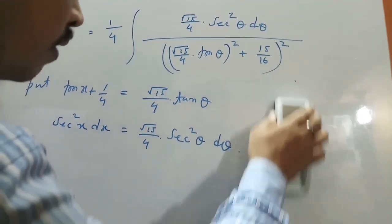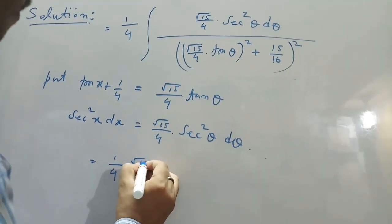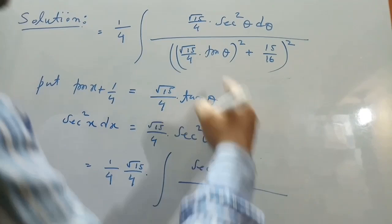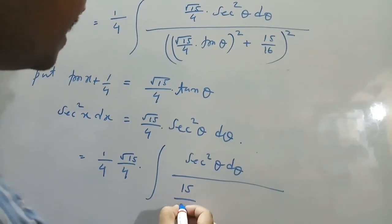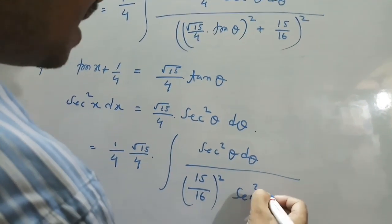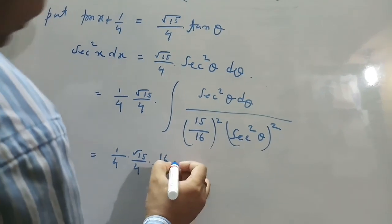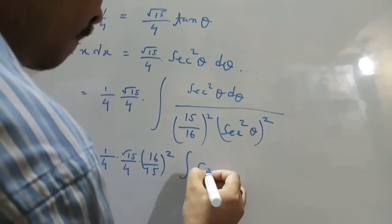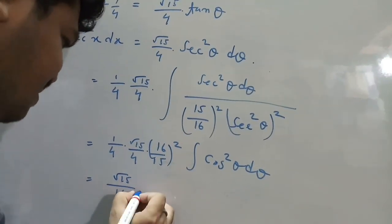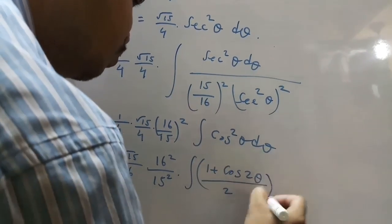Next step: 1/4 times (√15/4) is taken out of the integration, and this gives sec²θ dθ divided by (15/16) times sec²θ whole squared. Simplifying: 1/4 times (√15/4) times (16/15)² times the integral of cos²θ dθ. Using the identity cos²θ = (1 + cos 2θ)/2 dθ.